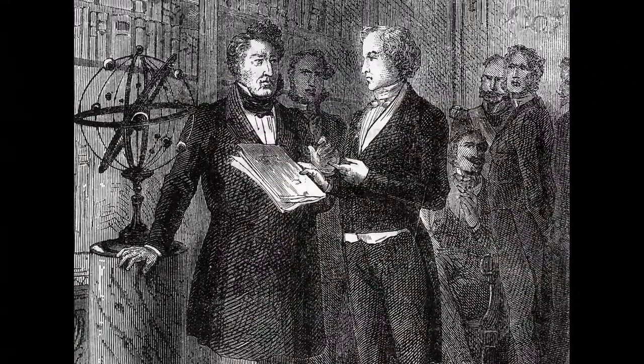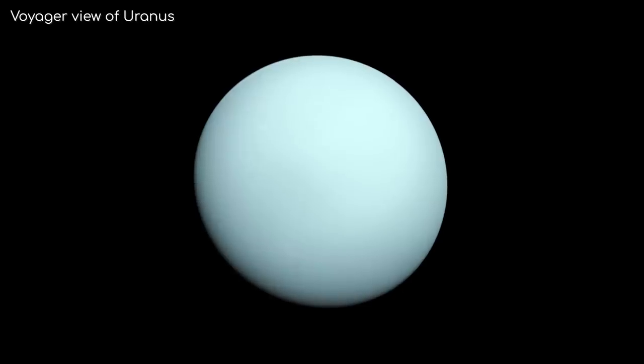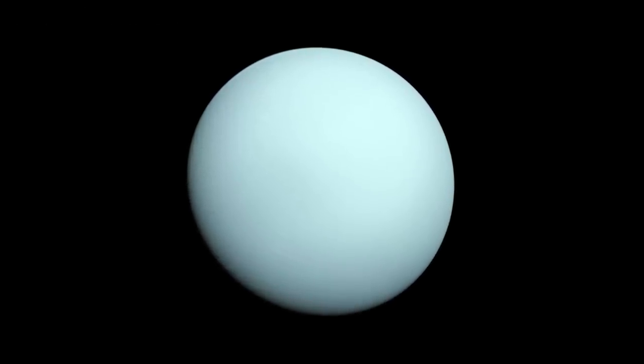In the late 1700s, Uranus was discovered, which was revolutionary at the time, as no one considered there could be more planets beyond the visible 5.